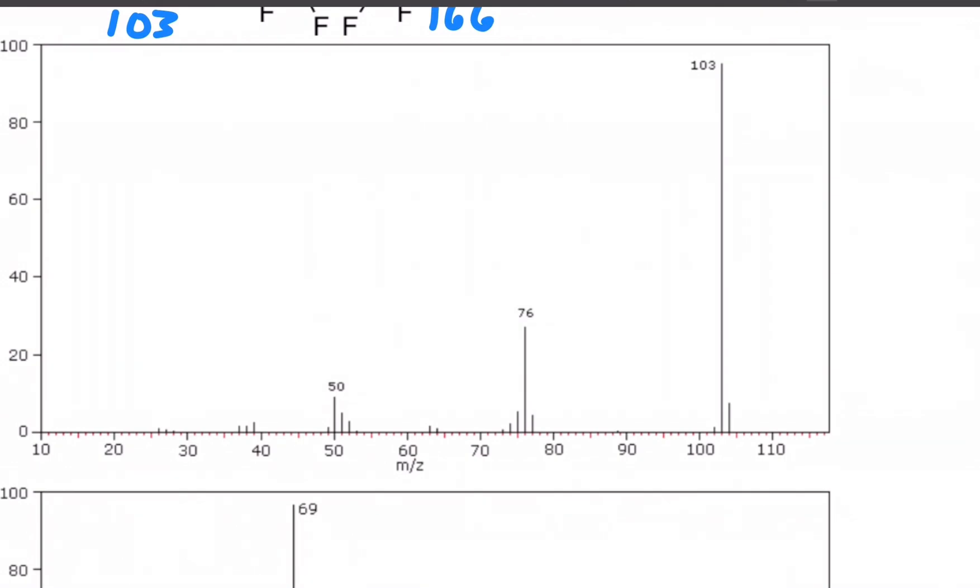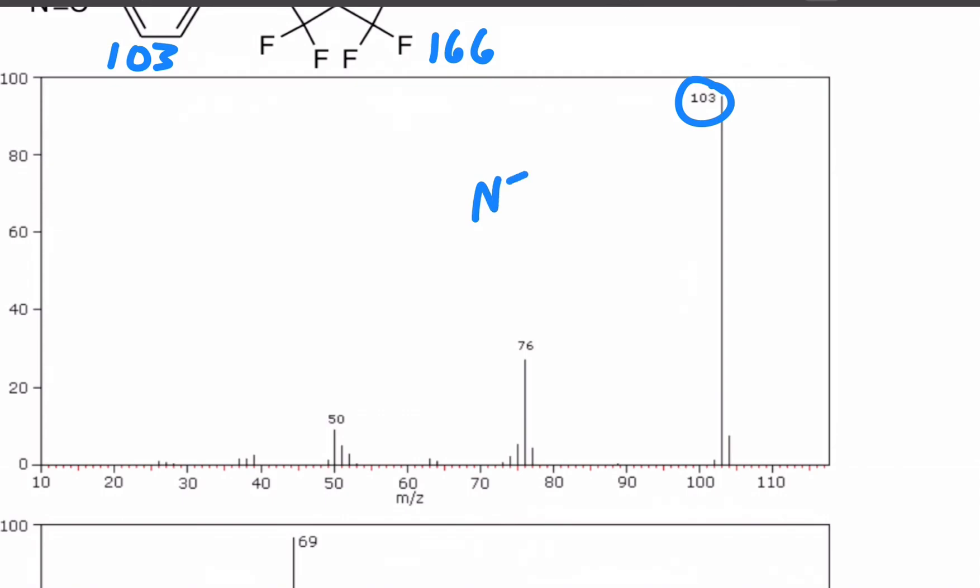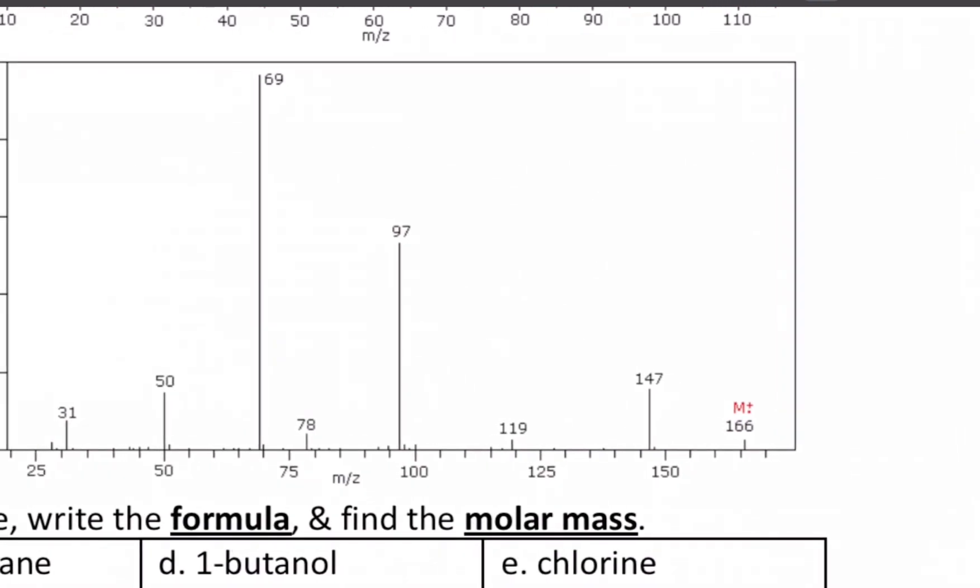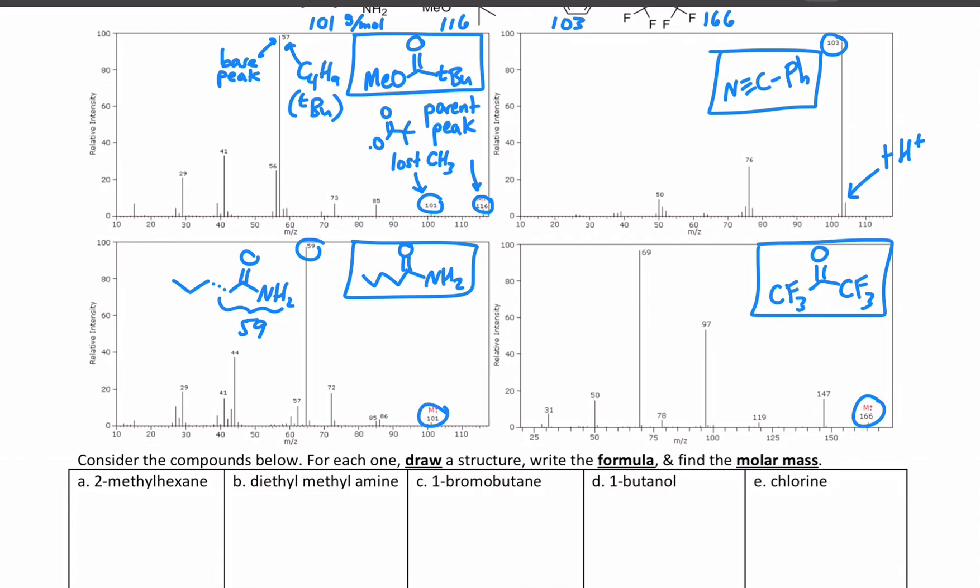In the upper right, this 103 matches the nitrile. So that's got to be the benzonitrile. This peak here with one extra is probably just it picking up a hydrogen ion somehow. That's why it is one higher. And lastly, the 166 must be the ketone.